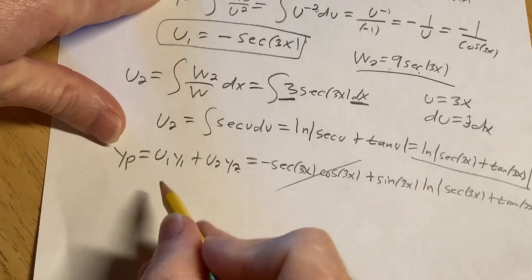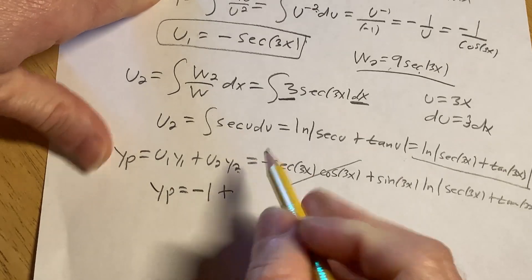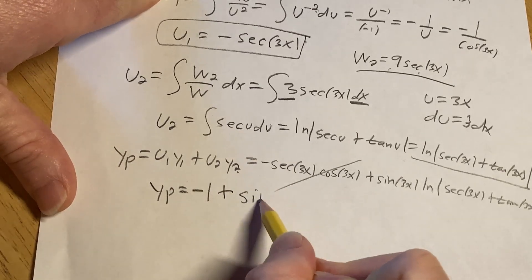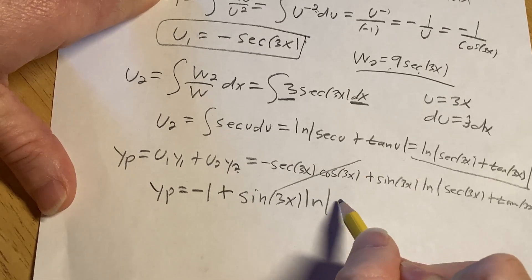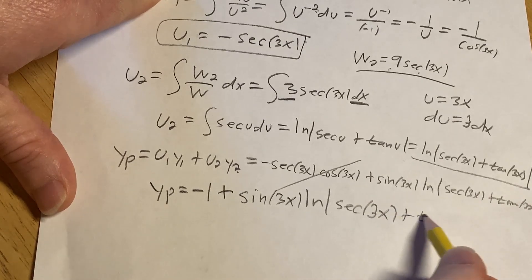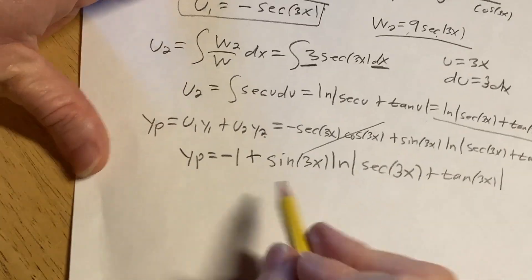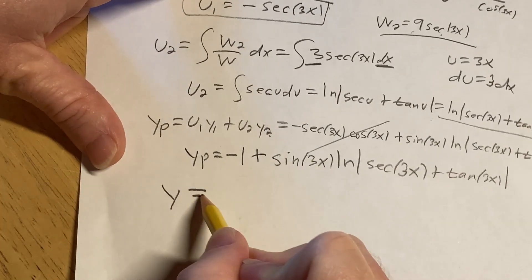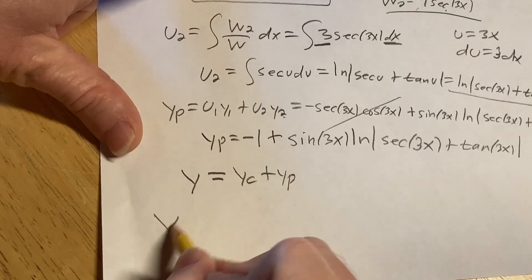Something magical happens. Look, that's a 1. So y sub p is equal to negative 1 plus sine 3x, natural log absolute value secant 3x plus tangent 3x. Okay, really cool. So the final answer is y equals y sub c plus y sub p.